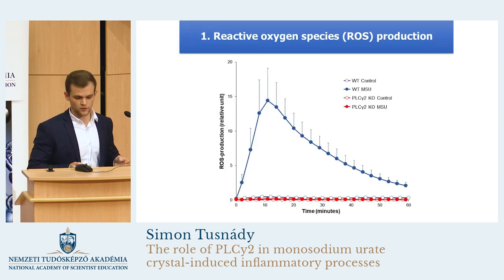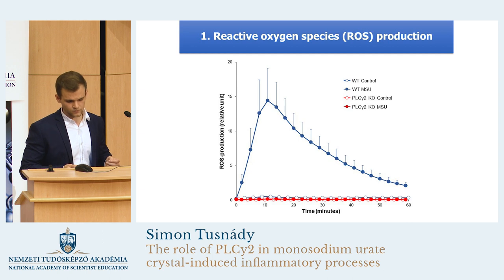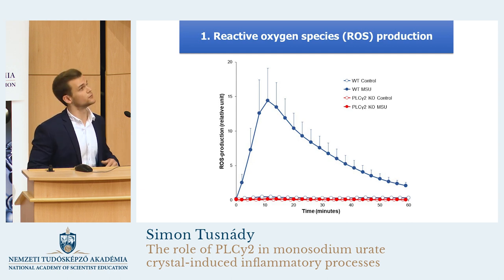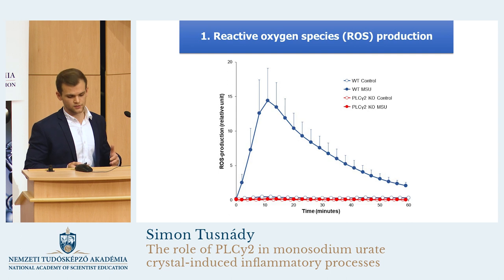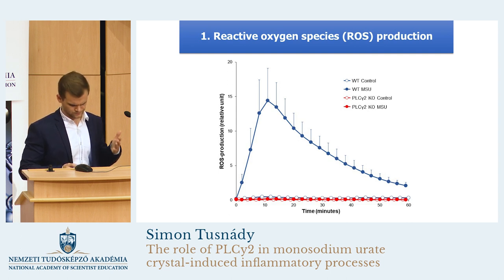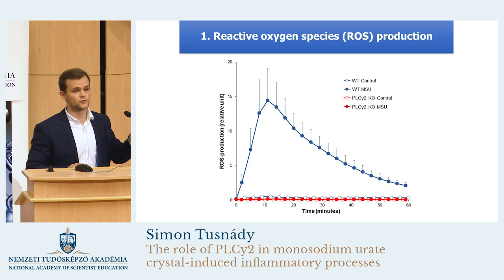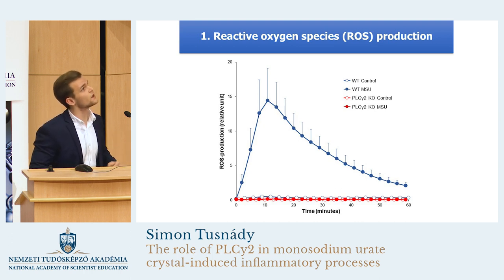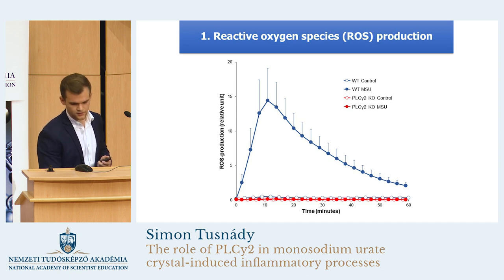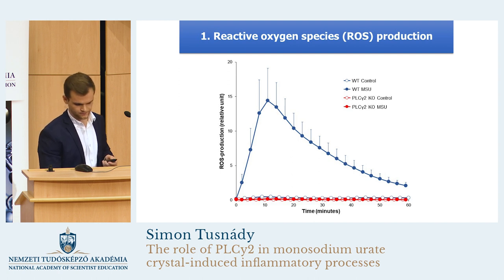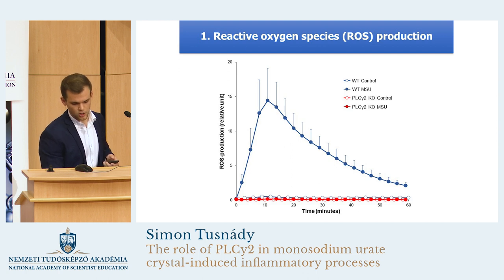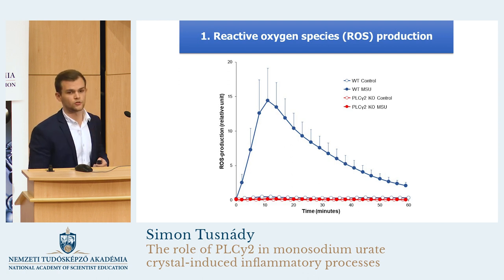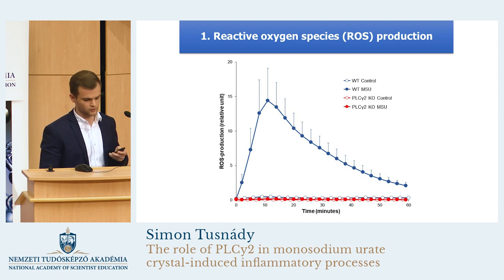We examined the superoxide production of the cells. For this, we placed the cells in a luminometer for one hour, and the luminescence signal resulting from the superoxide production was measured. As you can see, the urate crystals induced a significant superoxide production in the wild-type cells. But in the PLC gamma 2-deficient neutrophils, the urate crystals were almost unable to induce the activation of the neutrophils and the superoxide production.